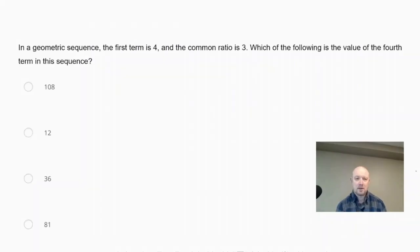In a geometric sequence, the first term is 4 and the common ratio is 3. Which of the following is the value of the fourth term in this sequence? Is it 108, 12, 36, or 81?